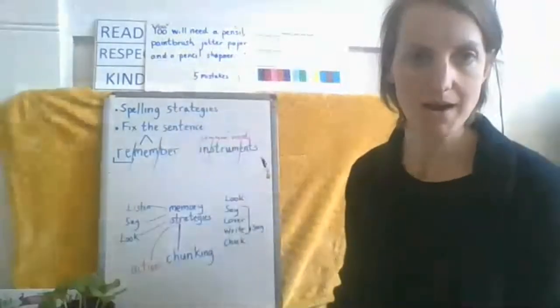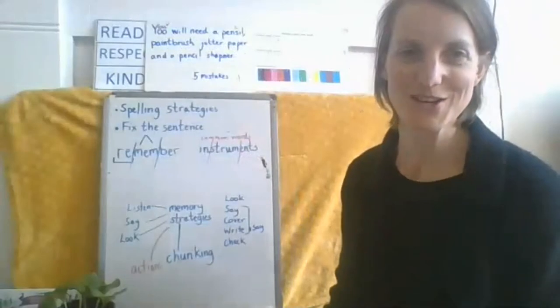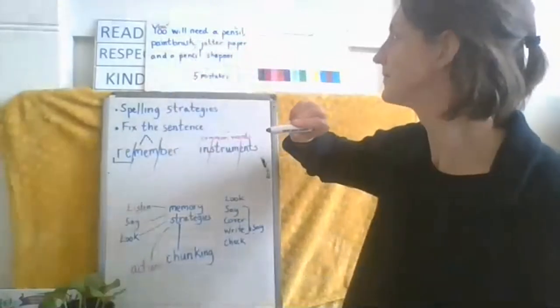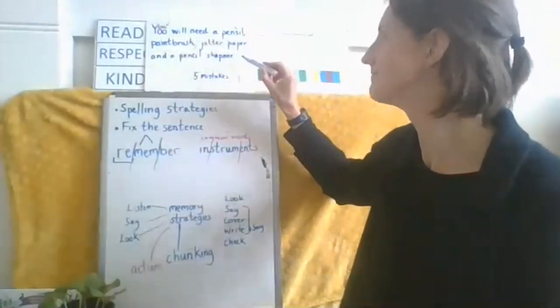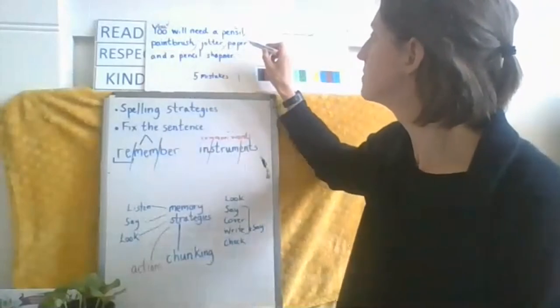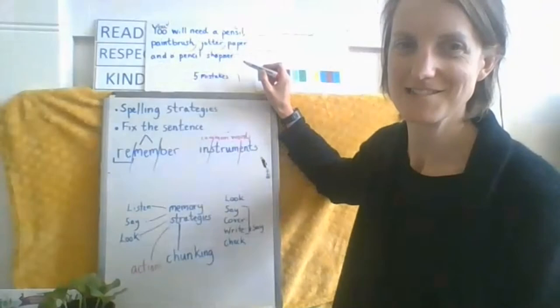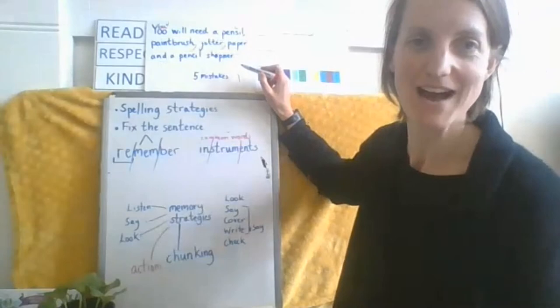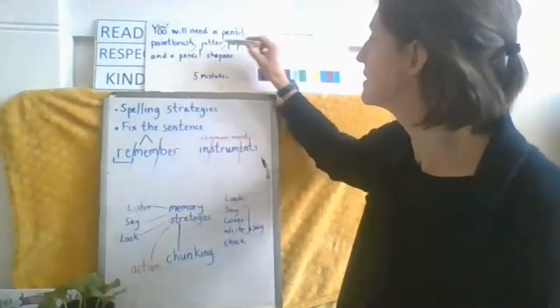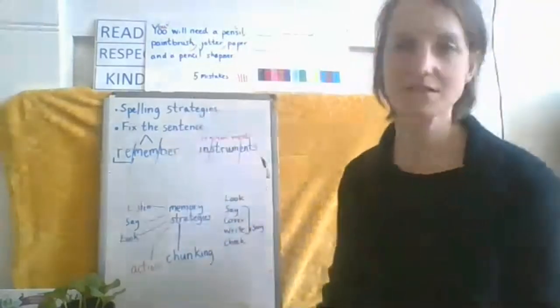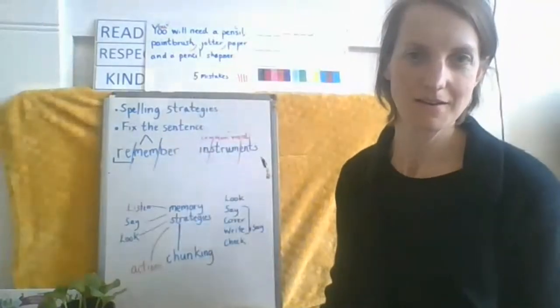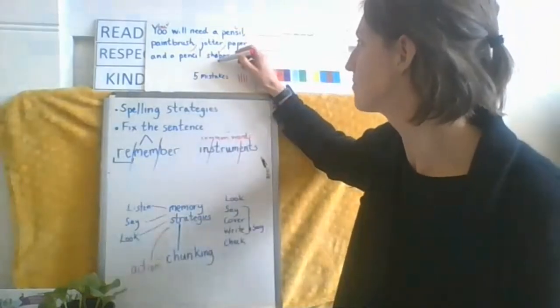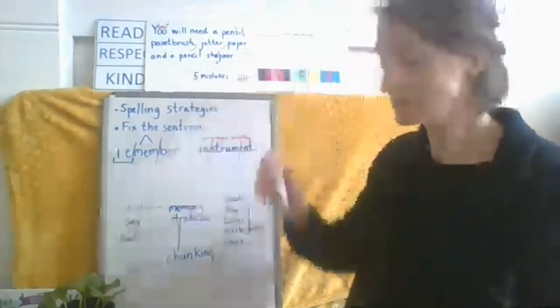Where do the commas go? After each word. That's right. So pencil. Paintbrush. Jotter paper. Two different words. Jotter. Now do I put a comma there before and? That's right. That's right. If you've watched a video, you know that we don't put a comma before and. That's okay. And we've got one, two, three, four. Where is the fifth mistake? Excellent. That's right. A sharpner. We have a sharpner. Sharp. Okay. And that one goes there. Those were your five mistakes.